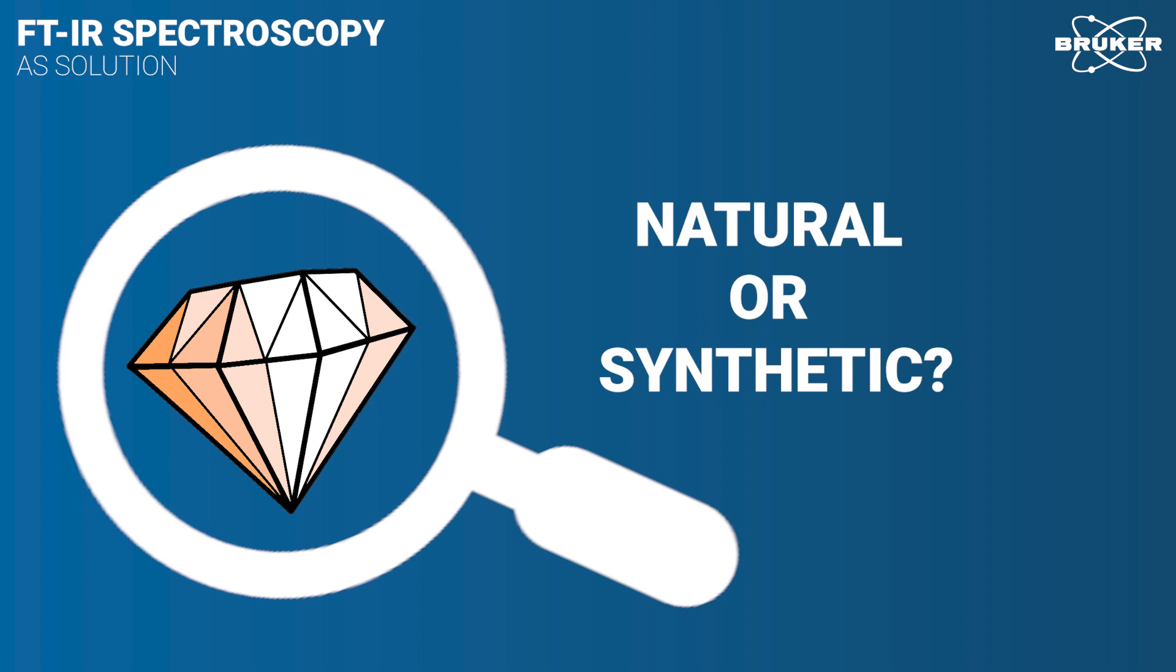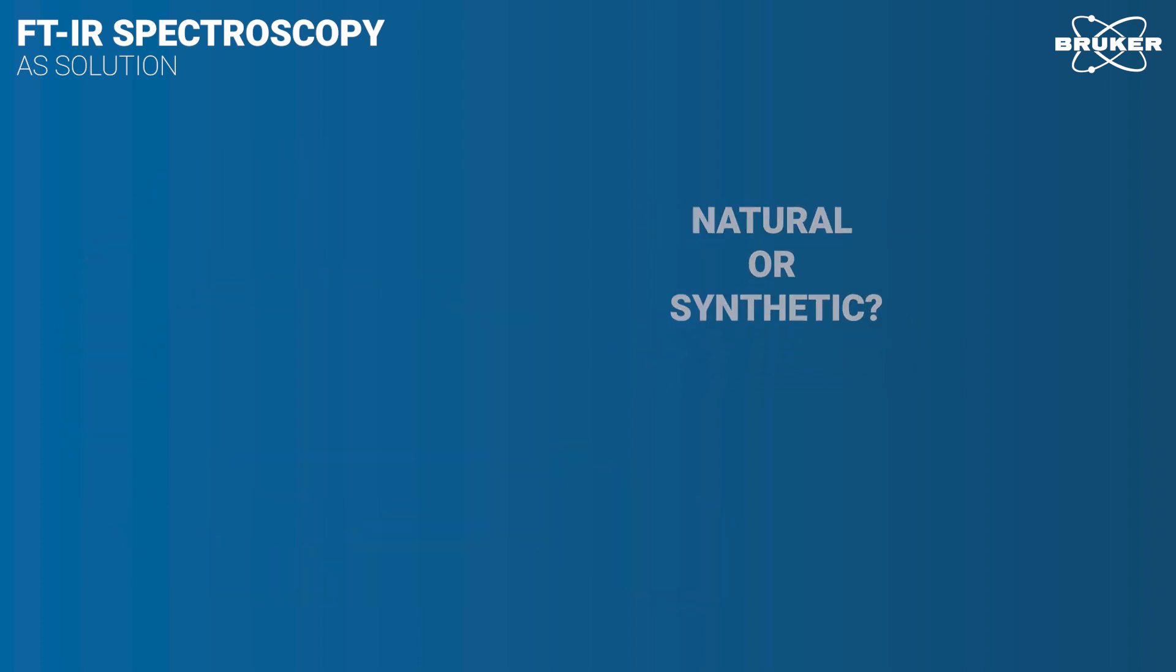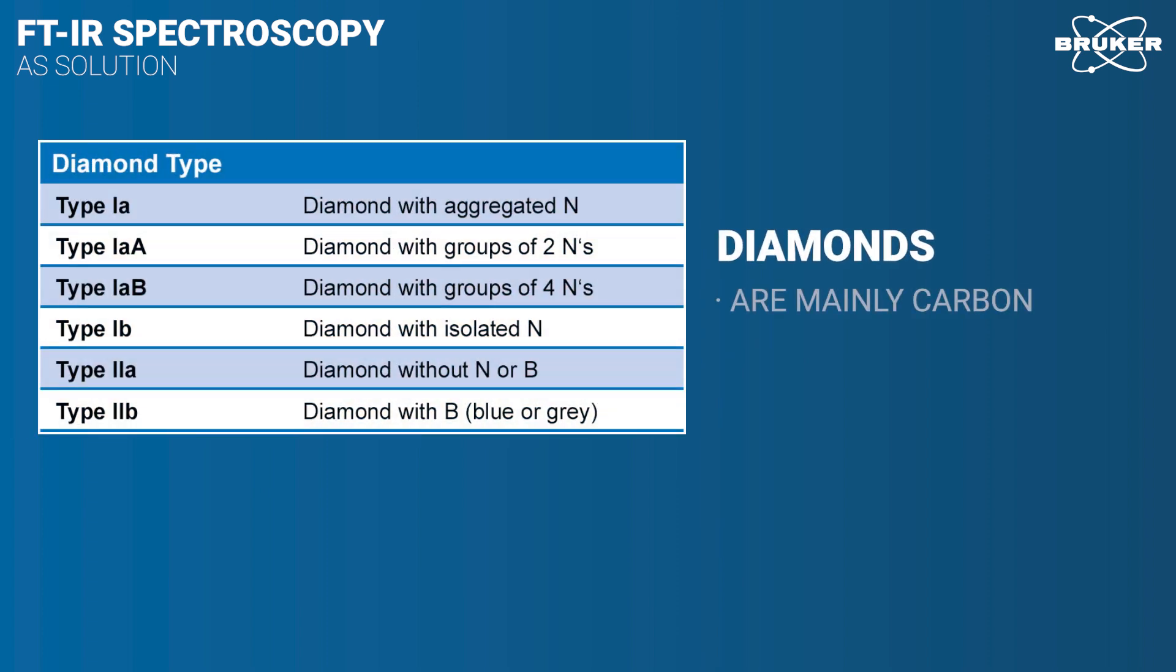IR can distinguish natural diamonds from those which are potentially synthetic or might have undergone HP-HT treatment. Although all diamonds are mainly carbon, they are not chemically identical.